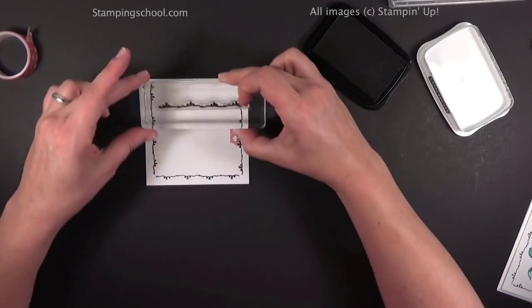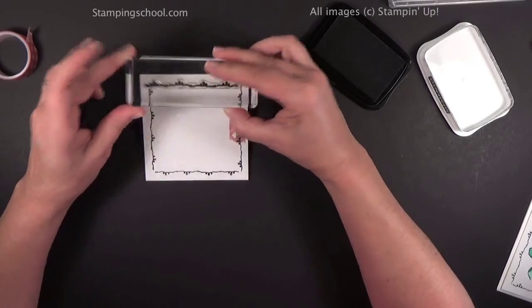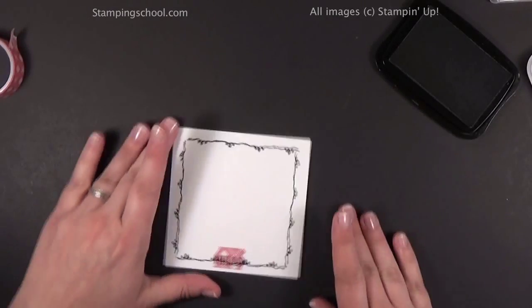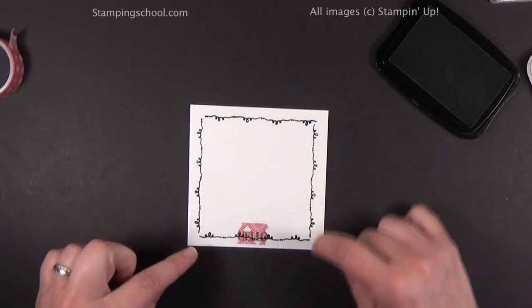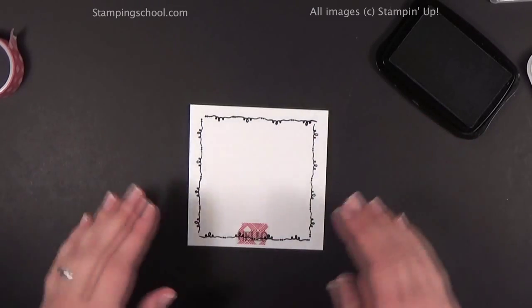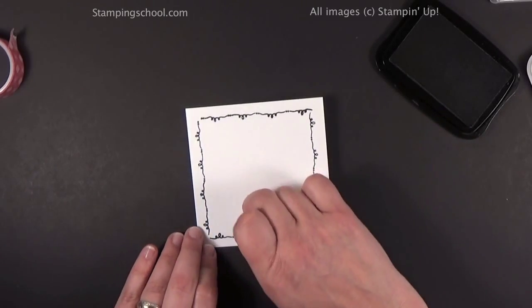Now if you mess up, just take a little black marker and add those little dots in there. Then all you have to do is take off your washi tape to reveal your little greeting at the bottom, and you can fill in your card with anything you want.